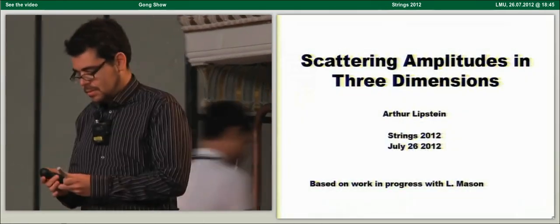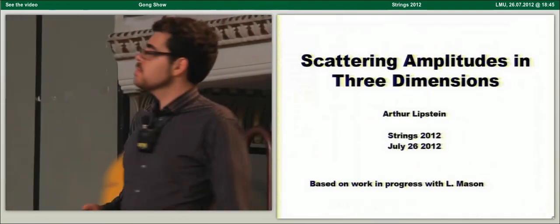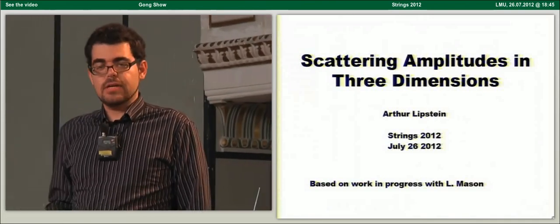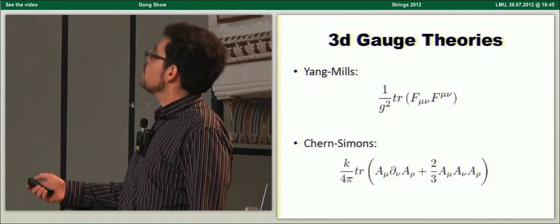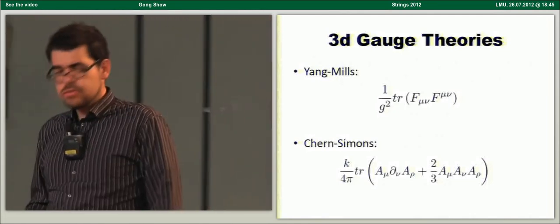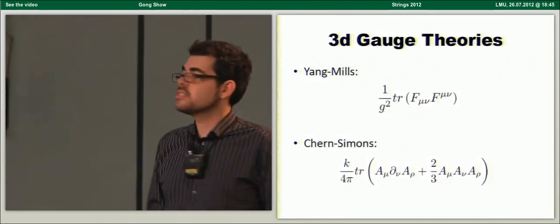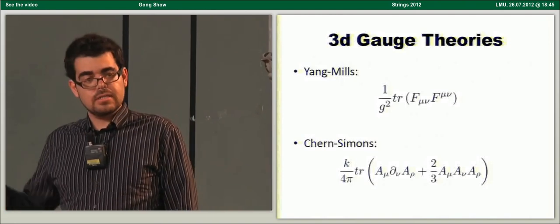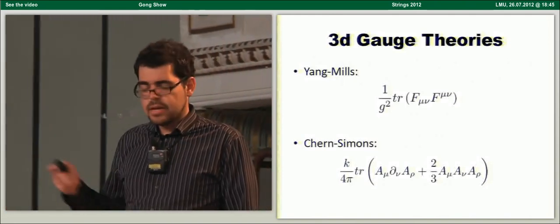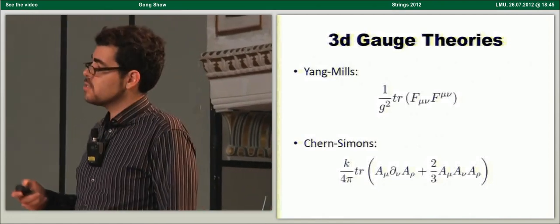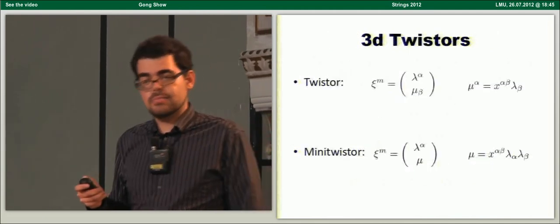Today I'm going to talk about work in progress with Lionel Mason regarding scattering amplitudes in three-dimensional gauge theories. In three dimensions, you have two types of gauge theories: 3D Yang-Mills theories and 3D Chern-Simons theories. While there has been a lot of recent progress in computing amplitudes for 3D Chern-Simons theories, the amplitudes for 3D Yang-Mills theories have been explored to a lesser extent. Today I describe some recent results regarding amplitudes of maximal 3D Yang-Mills theories.